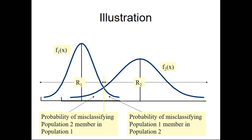You can unmute and answer. Mudassir, I will answer your question from the PCA session after the class — today, after the class. How do I get the probability of misclassifying a population two member into population one, and a population one member into population two? This is the area I want to compute. Can anyone answer?